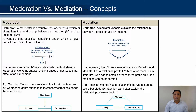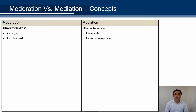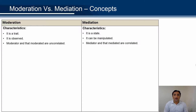Now let's discuss the characteristics one by one. A moderator is a trait; on the other hand, a mediator is a state. A moderator is observed; on the other hand, a mediator can be manipulated. In moderation, the moderator and the moderated variable are uncorrelated. On the other hand, in mediation, the mediator and the mediated variable are correlated.